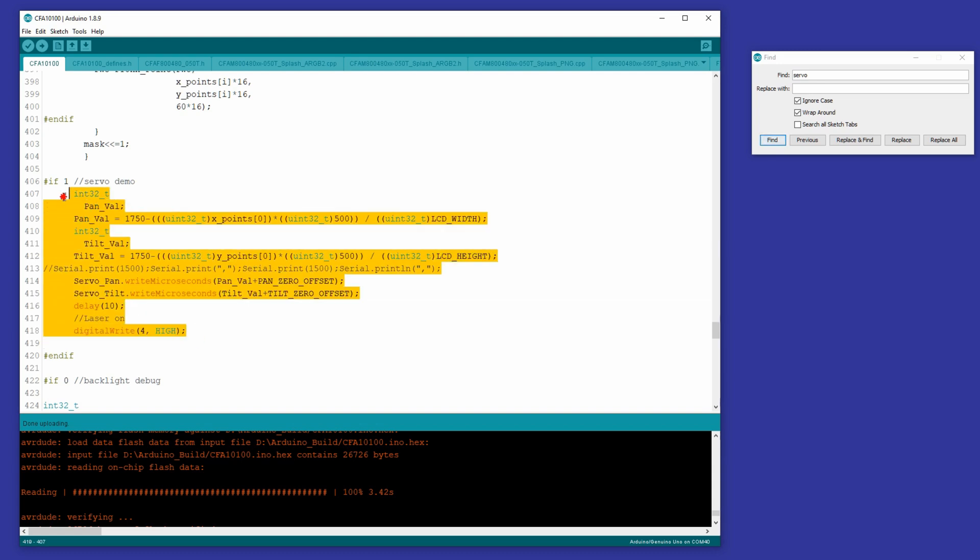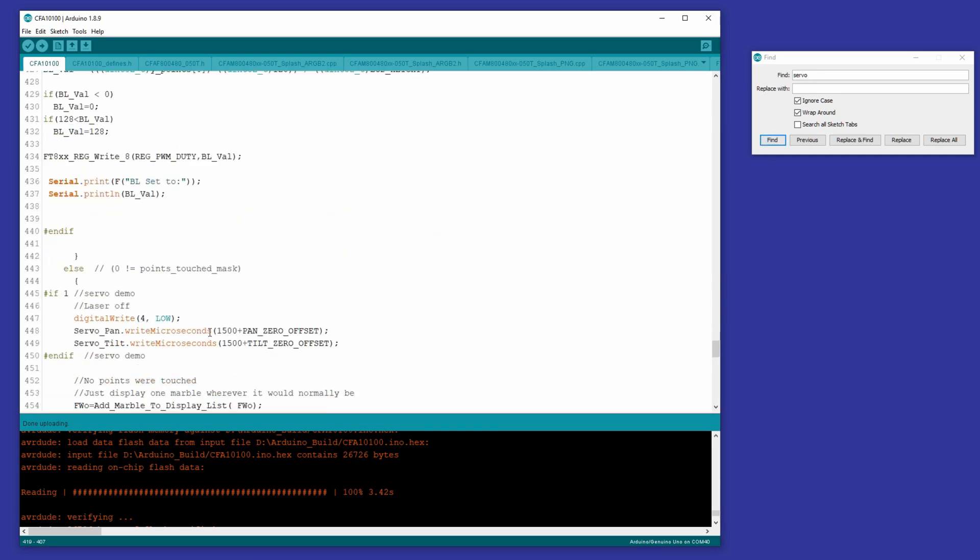Anyway, so that turns the laser on. And so right now, once this code executes, because you've touched the screen, the servos will be slewing to the point that corresponds to your touch and the laser will be on. And the next thing we need to do is turn it off.